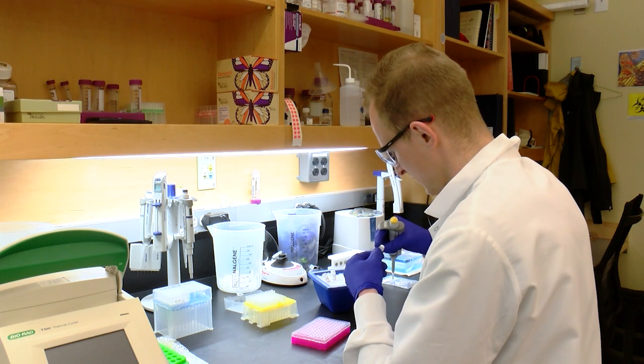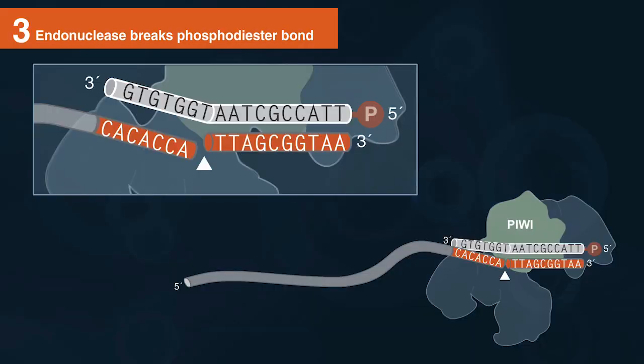And will they cut in a specific location? Yes, so Thermus thermophilus Argonaut cuts directly across from positions 10 and 11 in the sequence that's complementary to the guide. So we have an animation that overviews how this Argonaut works, so we'll take a look at that.